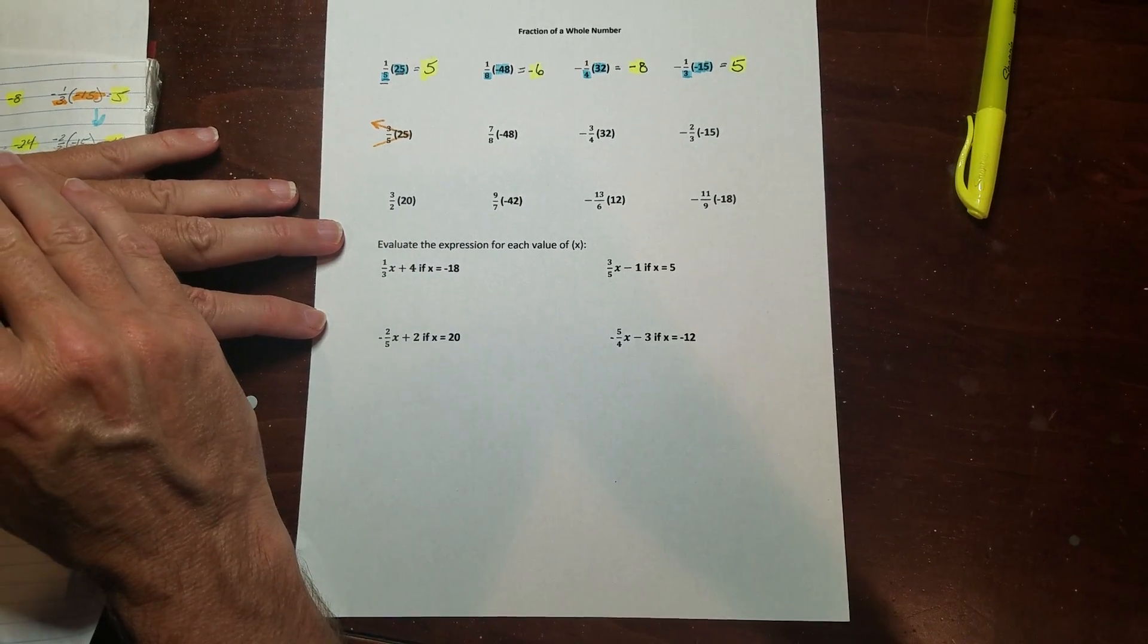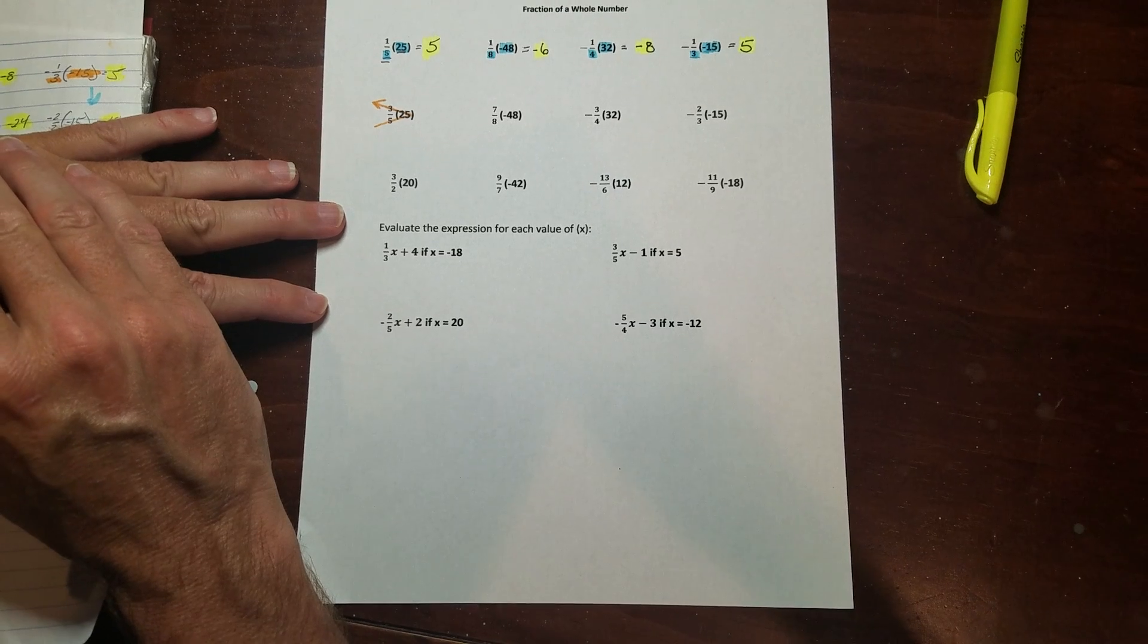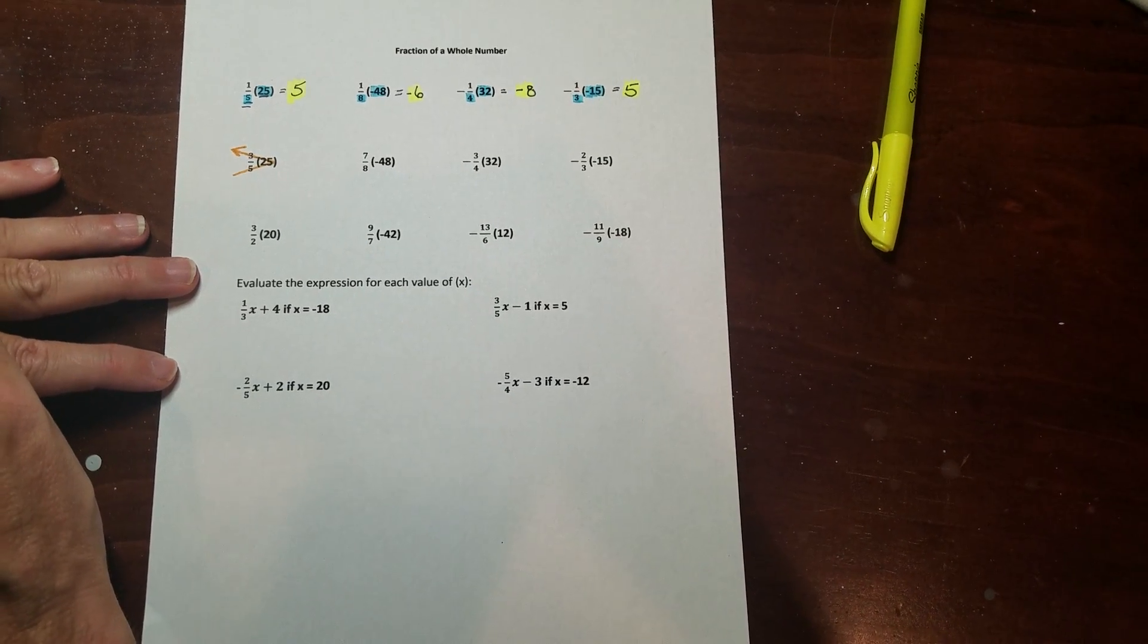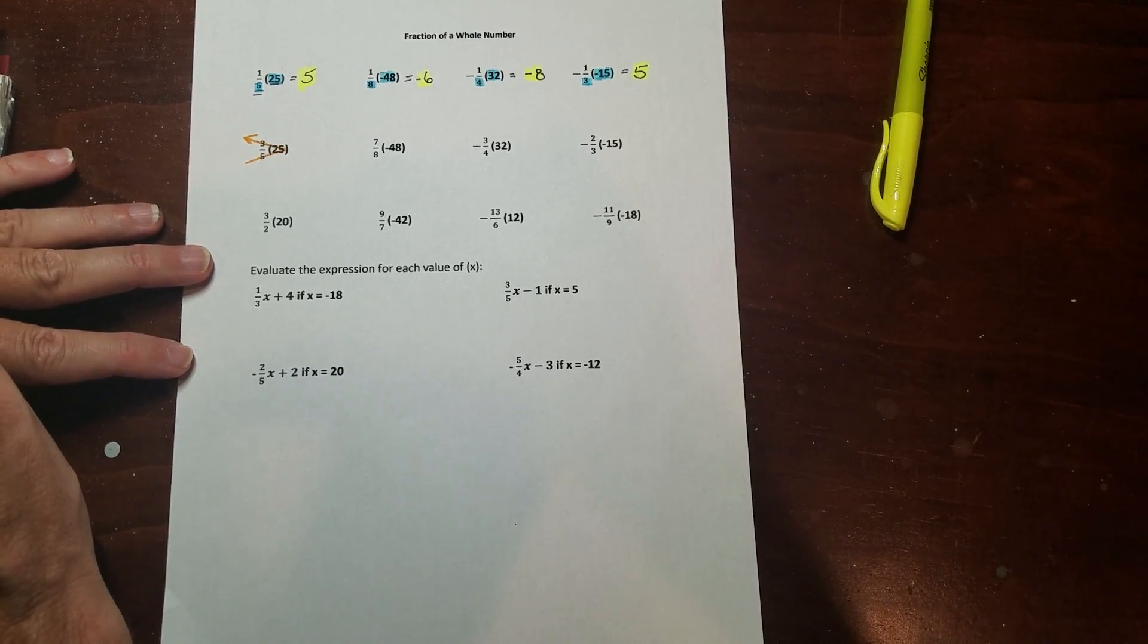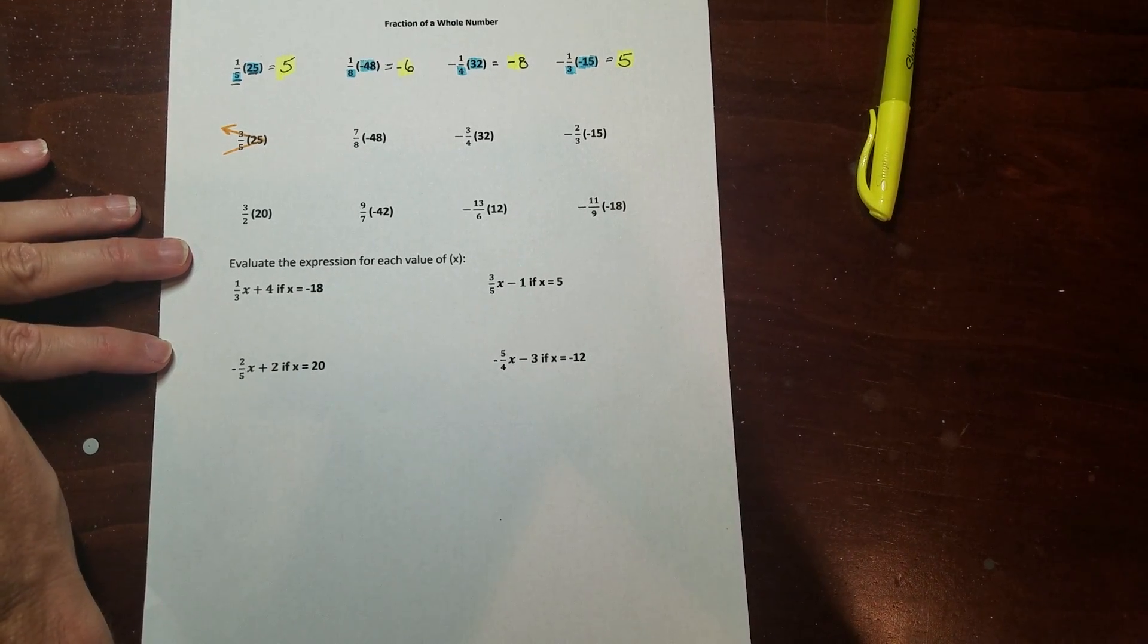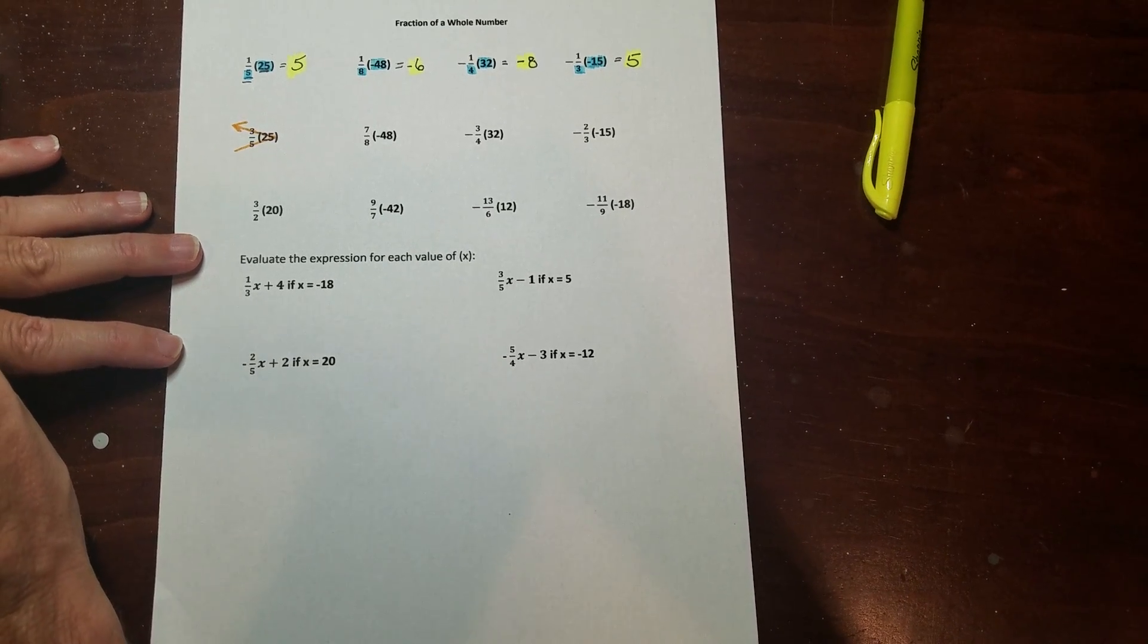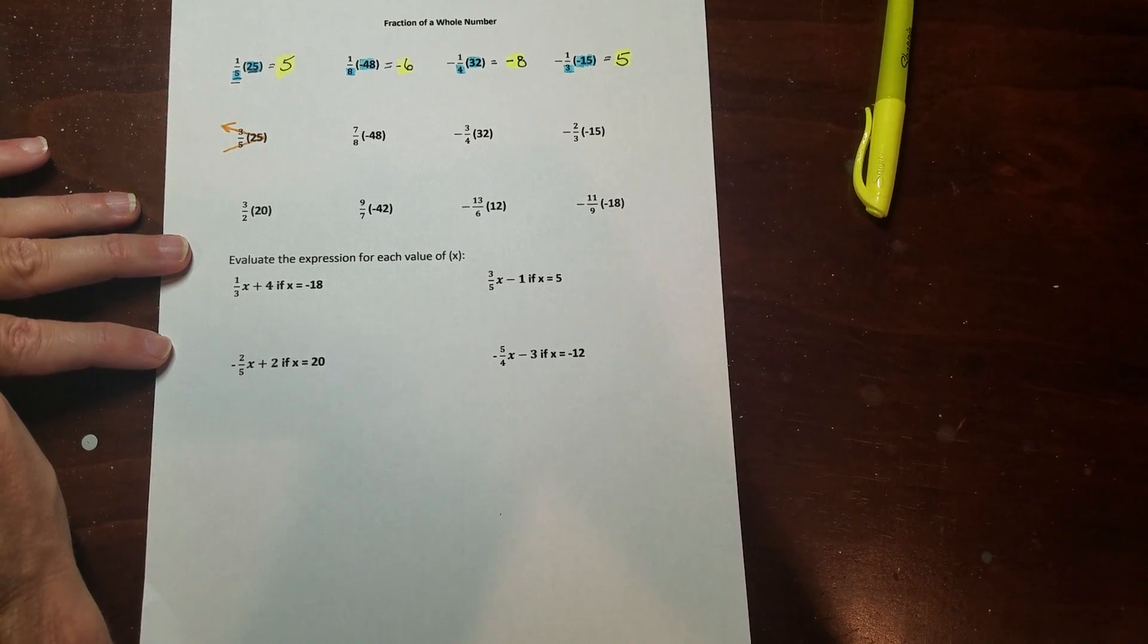Alright, so we're going to talk about how to find a fraction of a whole number, which is really basically multiplying a fraction times a whole number. If you're in eighth grade math or you're in Algebra 1, you're going to be doing this a lot. And what I'm trying to get across to you is I don't want you picking up a calculator to do this or writing out some kind of long fraction multiplication problem. The point here is to get you to be able to do this in your head. So I'll tell you how to do that.